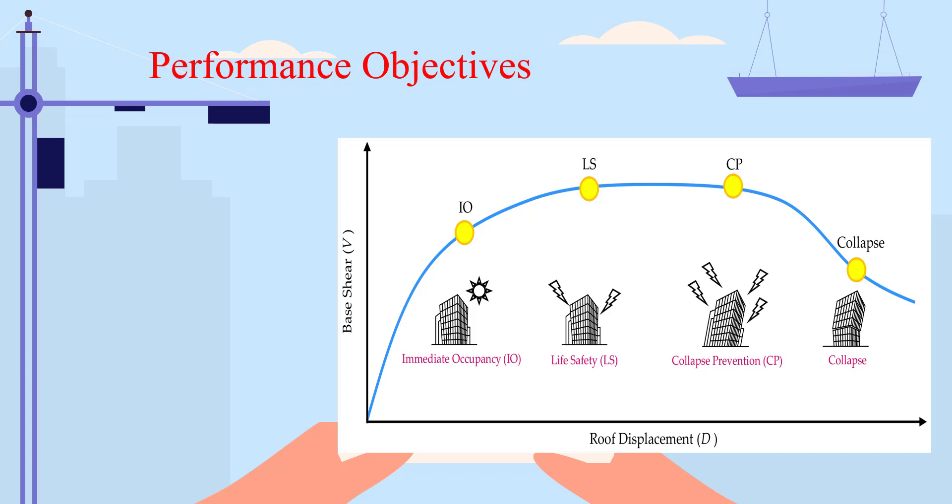Likewise, if you achieve a collapse prevention performance level, it means that the cross-sectional areas need to be increased.